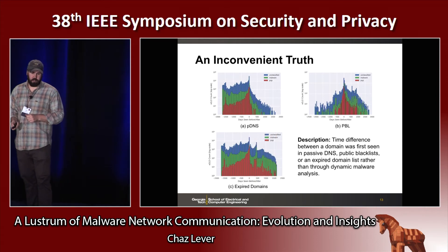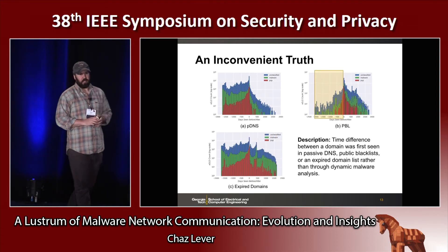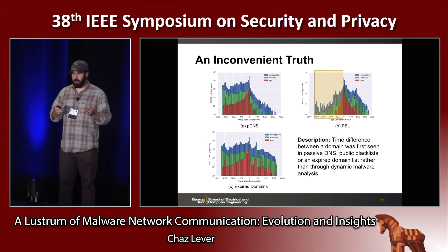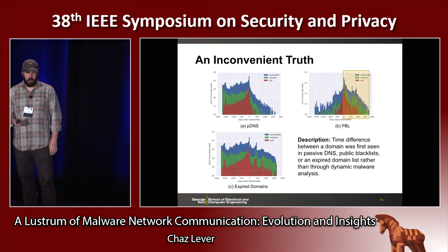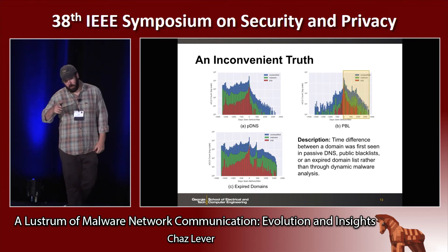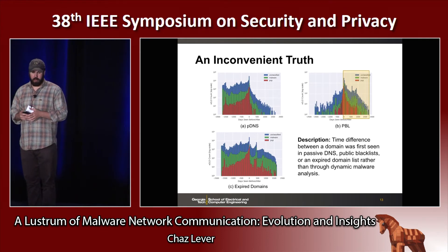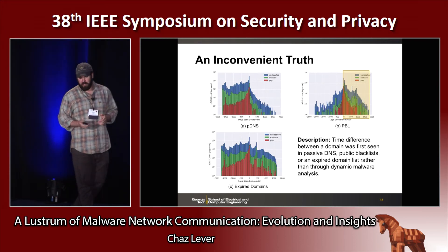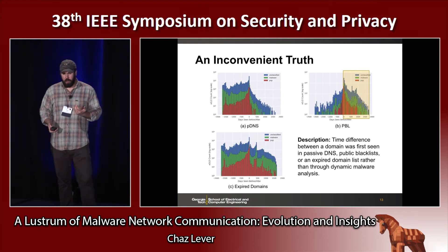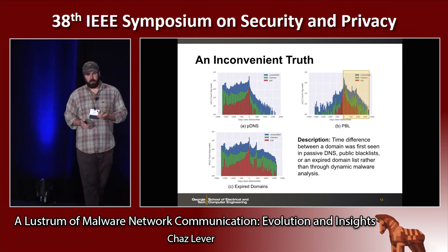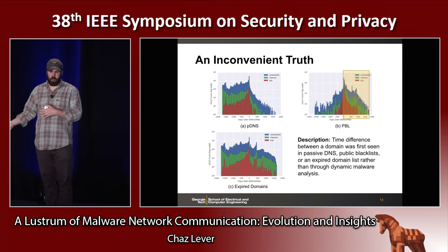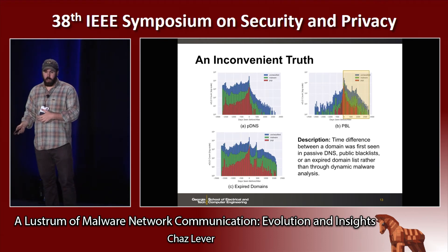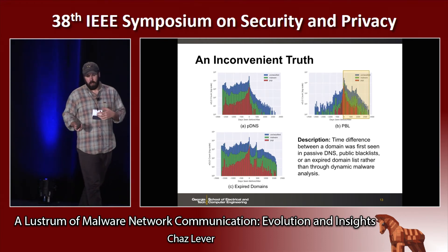The left-hand tail on the public blacklist distribution seems to indicate that in many cases, things aren't showing up on public blacklists before they show up in feeds. What we see more prevalently is that they show up in malware feeds after they already appear in the public blacklist — the reverse of what we want. This is actually consistent with previous work showing that domains seen in public blacklists had shown up in DNS on average 384 days before appearing in the public blacklist. We're seeing a similar thing here with malware feeds. Additionally, reputation systems have also shown this type of behavior appearing earlier than with public blacklists.